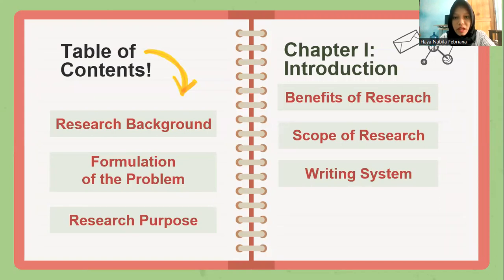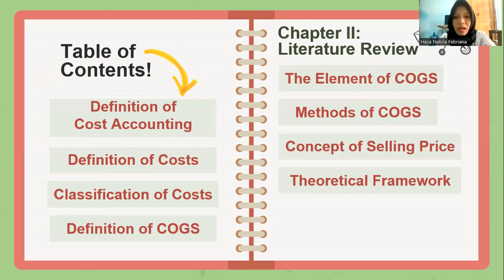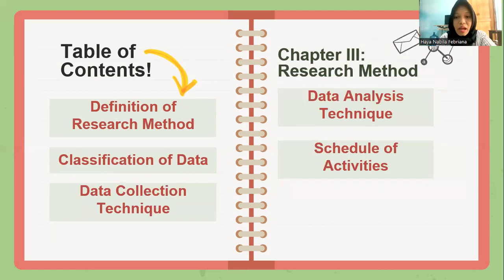Here is the table of contents. The first is Chapter 1, which is the introduction, including the research background, formulation of the problem, the research purpose, the benefits of research, the scope of research, and the writing system. Chapter 2 is the literature review, including the definition of cost accounting, definition of cost, classification of costs, definition of cost of goods sold, elements of cost of goods sold, methods of cost of goods sold, and the concept of selling price and the theoretical framework.